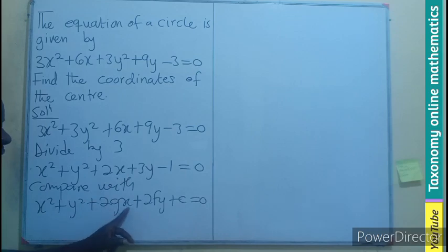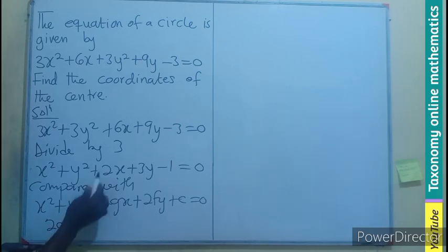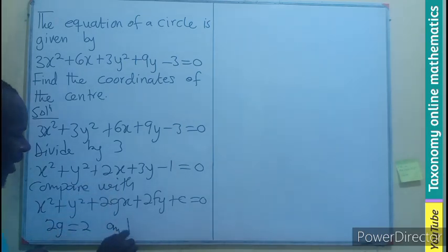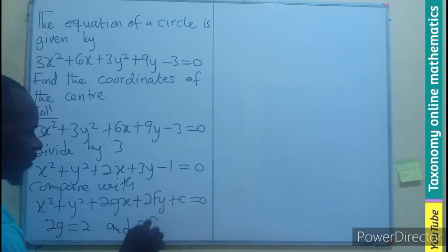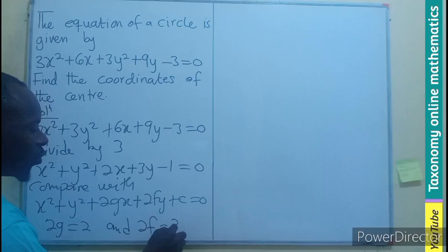2x, 2gx. You can see this and this are supposed to be the same. So since x is here, x is here, we can pick 2g to be the same as 2. And in the same case, we can see that 2f will be the same as the coefficient of y, which will be 3.